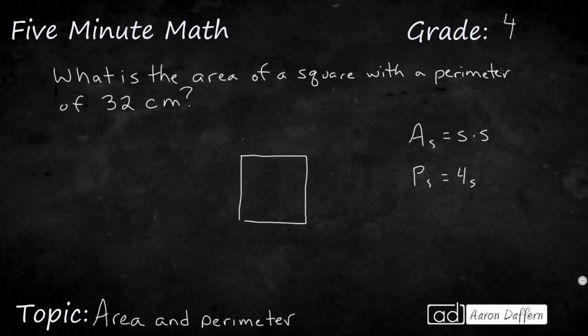So the perimeter is 32 centimeters. Let's use this. 32 centimeters equals, since that's the perimeter, four times the side. Think of that as a fact family. 32 equals four times what? If I think of the inverse relationship, 32 divided by four will get us that side.